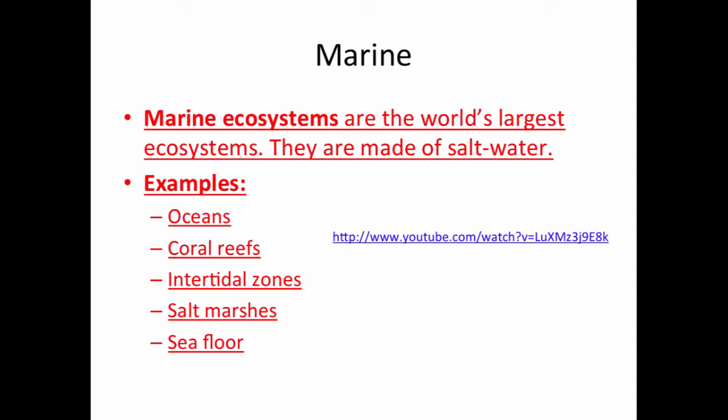The last type of ecosystem we're going to go over is marine. Marine is the world's largest ecosystem and is made out of saltwater. Examples include oceans, coral reefs, intertidal zones, salt marshes, and the seafloor. These are all different types that take place in the same ocean but can count as different ecosystems, pretty much depending on the depth, except for salt marshes.